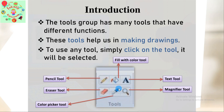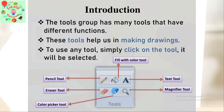To use any tool, simply click on the tool and it will be selected. Suppose I want the pencil tool — I will have to click on the pencil. Suppose I want the magnifier tool — I will have to click on the magnifier. If I want the text tool, I have to click on the text. If I want the fill with color tool, I click on this bucket. If I want to erase something, I click on the eraser. If I want to pick a color, I click on the color picker tool.